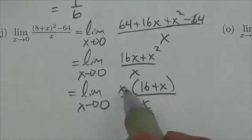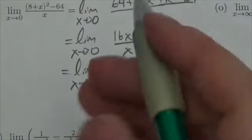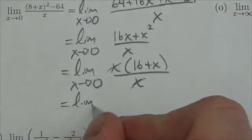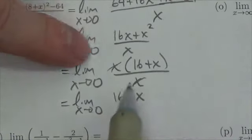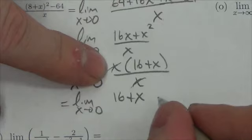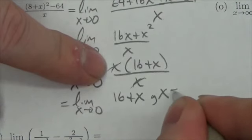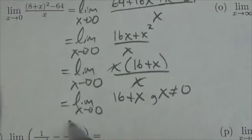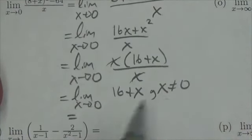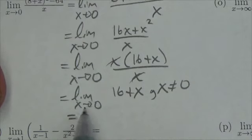Which is great, because I can actually cancel those x's. Now that's true, so that's the limit as x approaches 0 of 16 plus x. I can do that so long as I state that x is not allowed to equal 0. But once again, that's not an issue here, because I'm only finding the limit as x approaches 0. I don't actually get to 0.